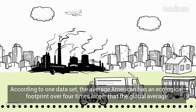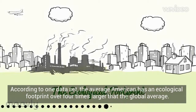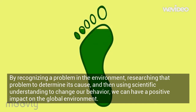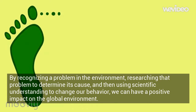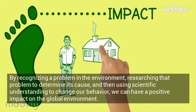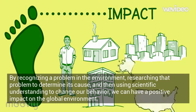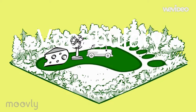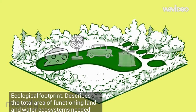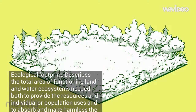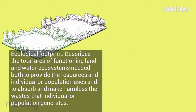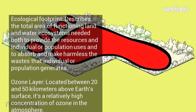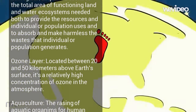The average American has an ecological footprint over four times larger than the global average. By recognizing a problem in the environment, researching that problem to determine its cause, and then using scientific understanding to change our behavior, we can have a positive impact on the global environment. An ecological footprint describes the total area of functioning land and water ecosystems needed both to provide the resources an individual or population uses and to absorb and make harmless the wastes that individual or population generates.